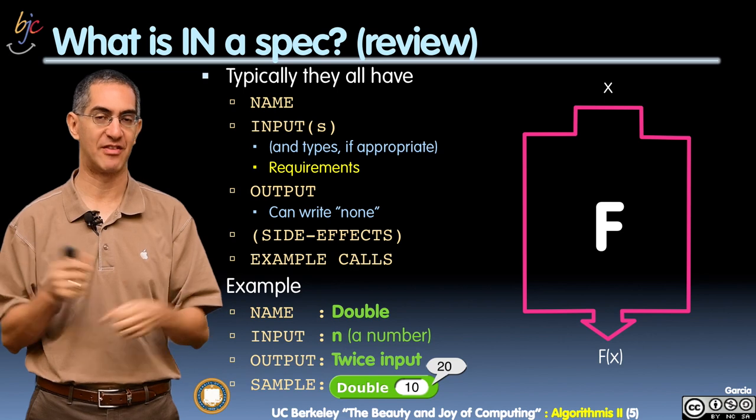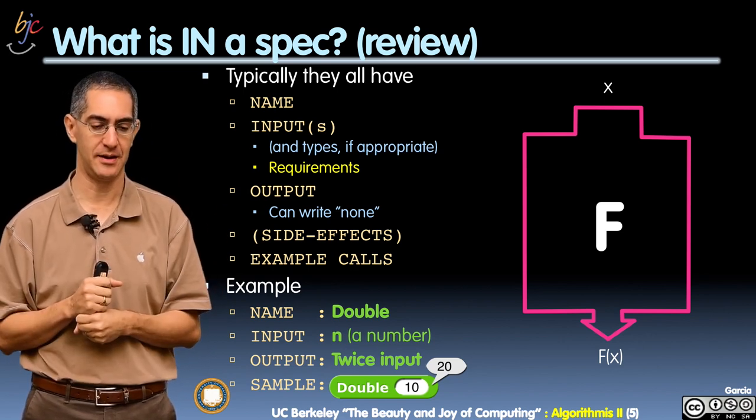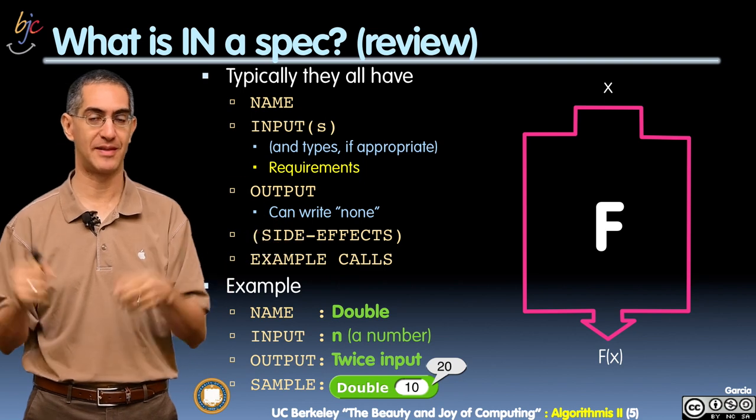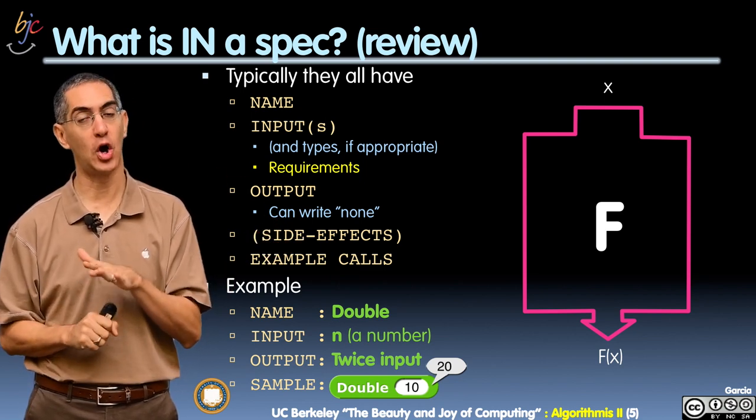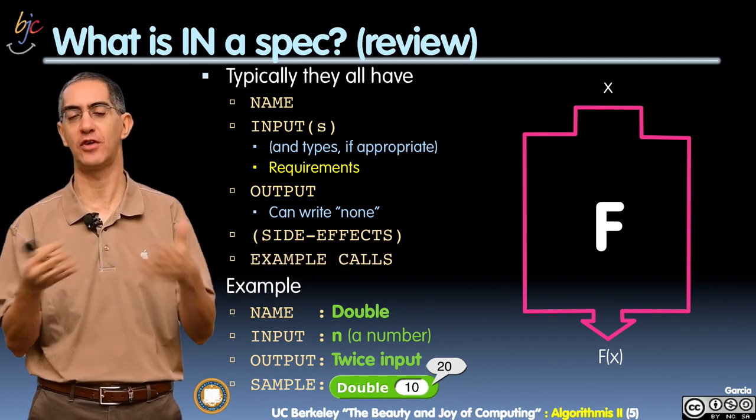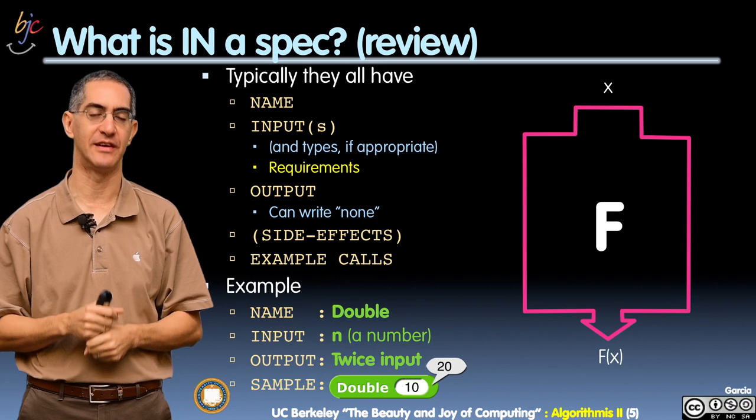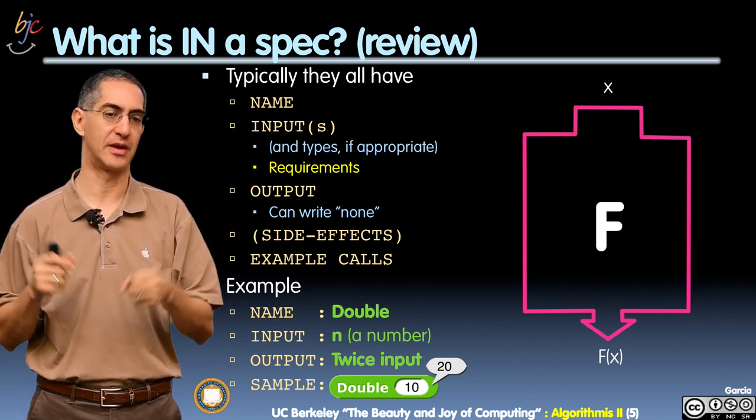The output, if it's a function. You can also write none if it's a command. Any side effects? We talked about that for commands, like play a sound or make the robot move. Example calls. So you might want to have some example ways to call it, so that the user says, oh, I get it. That's how you would use it. Oh, I see. The list is supposed to be drawn out like that, not one element at a time or something.